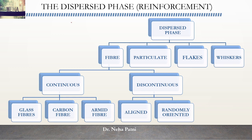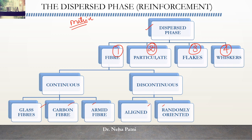The matrix is divided into three portions. The dispersed phase is divided into four portions: fiber, particulate, flakes, and whiskers. Fibers can be continuous or discontinuous. In continuous, you have examples like glass, carbon, and aramid fiber available in the market. In discontinuous, you have two options: aligned or randomly oriented. We'll look at each one in the coming slides.